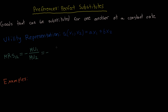The marginal utility with respect to good 1 is just the partial derivative of the utility function with respect to good 1. Similarly, the marginal utility with respect to good 2 is just the partial derivative with respect to good 2. We can solve for these quite easily because the utility function is just linear in both goods. Therefore, the numerator is just a and the denominator is just b, and since a and b are just constant parameters, the marginal rate of substitution is the constant negative a over b.